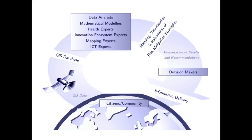The following order of events is suggested. The citizens collect geo-referenced data related to risk. Simultaneously, remote-sensed data from satellites is collected. The whole data is stored in a GIS database.